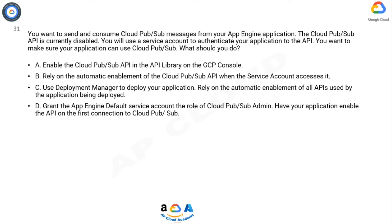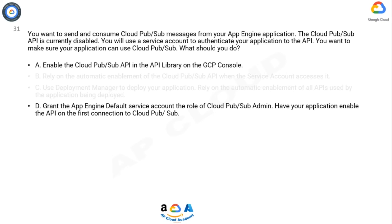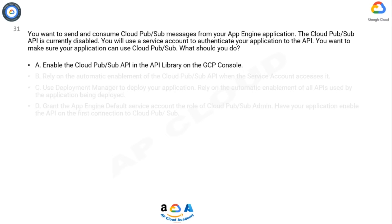The correct answer is Option A. Quickstart: using the Google Cloud console. This page shows you how to perform basic tasks in Pub/Sub using the Google Cloud console.